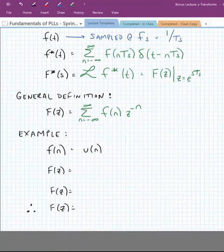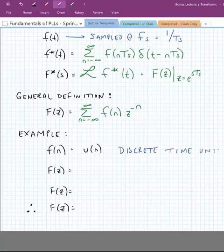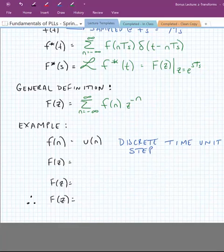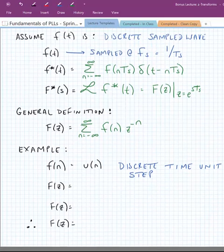Let's look at an example. Our example will be the function f of n is equal to u of n, which is a discrete-time unit step function. Let's find the z-transform of this.